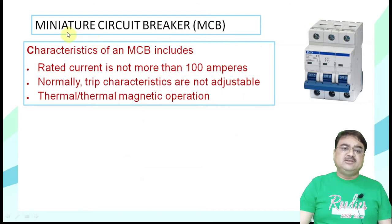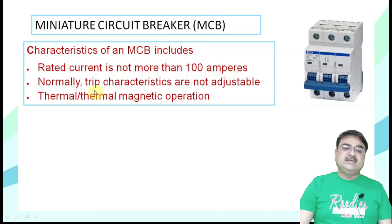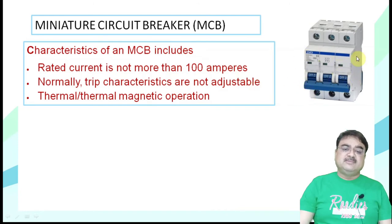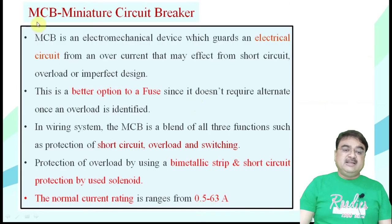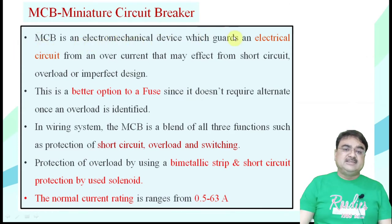The first circuit breaker is called MCB — miniature circuit breaker. The characteristics of MCB: the rated current is not more than 100 A. The trip characteristics are not adjustable — you cannot adjust the maximum ampere at which it will trip automatically. It uses thermal and thermal-magnetic operation. The MCB is an electro-mechanical device which guards an electrical circuit from overcurrent due to short circuit, overload, or imperfect design.